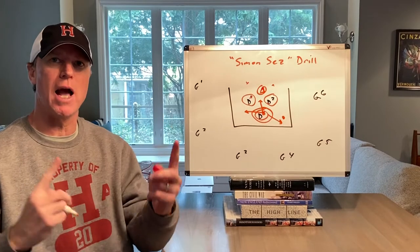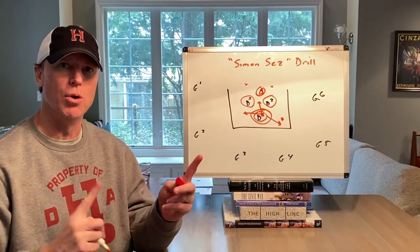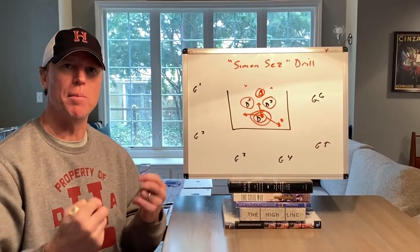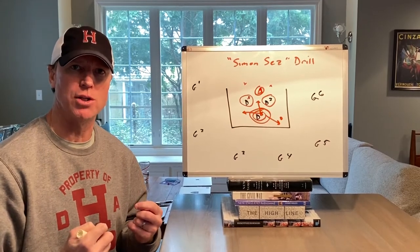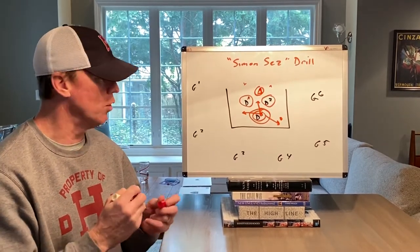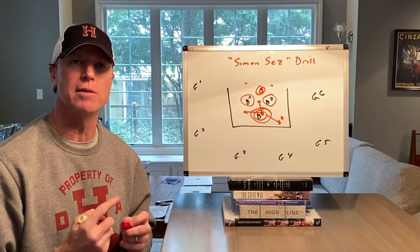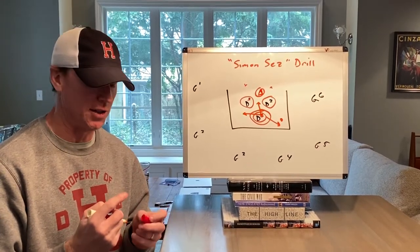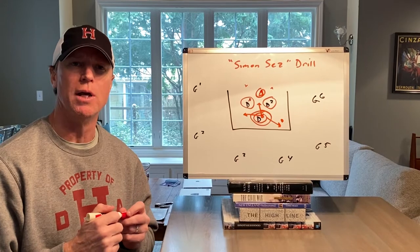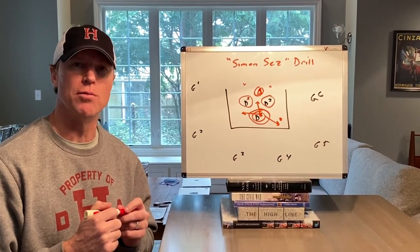So all three guys will rotate through being both an instructor and a recipient of language and instruction. If this rep goes on for 45 to 60 seconds, each guy will be in the instructor's role at least one time and in the recipient role at least one time.